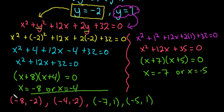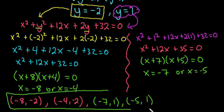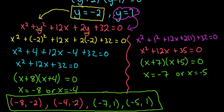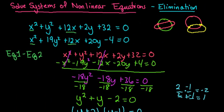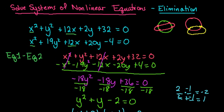This gives us four total solutions, confirming that the circle and ellipse intersect at four different points.